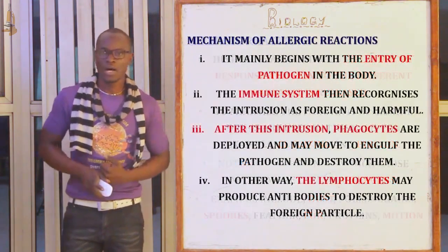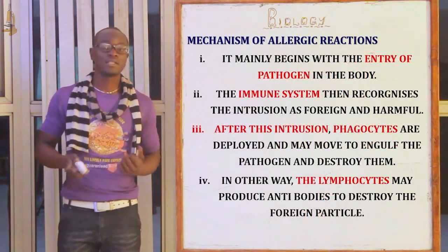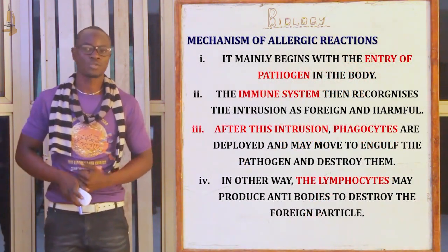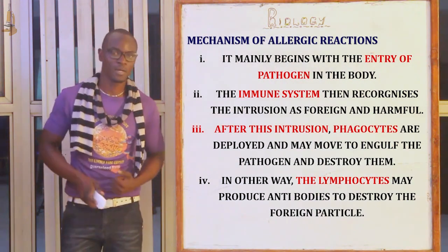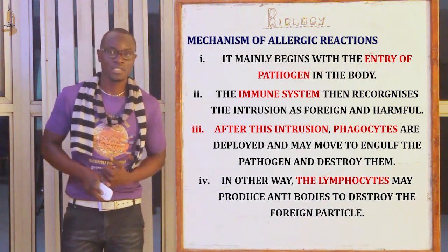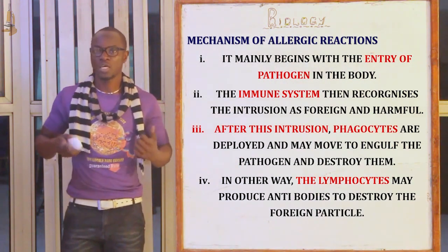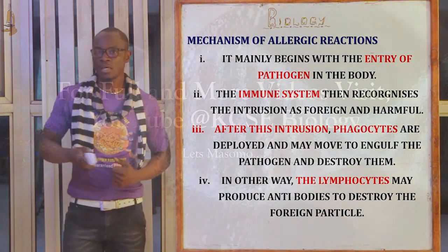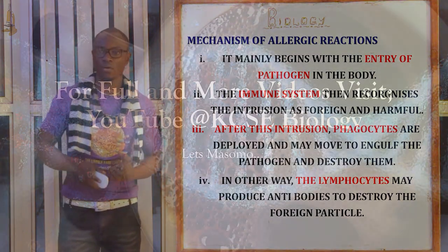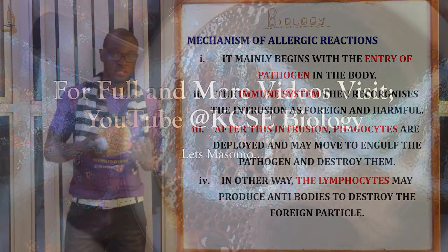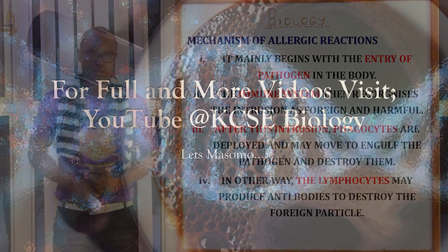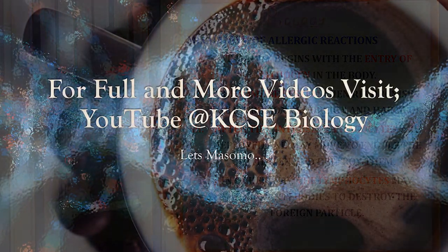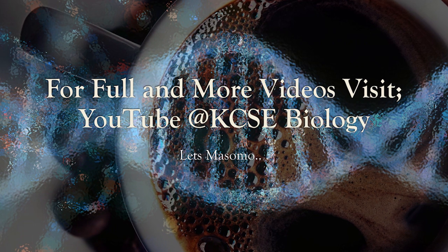Now let's look at the mechanism of allergic reaction — how does the allergic reaction take place? An allergy mainly begins with the entry of the pathogen into the body. The immune system then quickly recognizes this intrusion, and the phagocytes move and engulf the pathogen, destroying them.